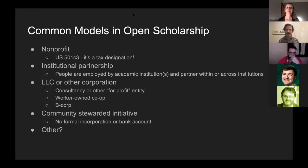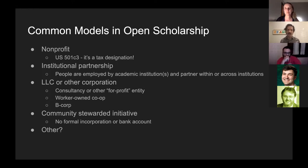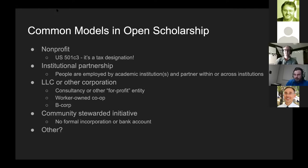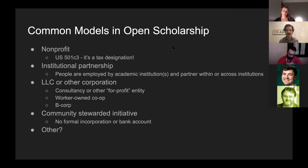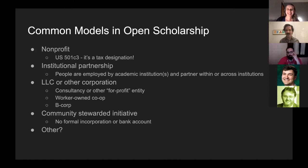We've been at the university for 15 years, and it looks like next year will be the year we become an actual entity within the university. We've had essentially an MOU with the university library that very loosely said this is where we are based, but that's the extent to which our status has been formalized. We've considered spinning off into a non-profit independent of the university, and also tried to find ways of institutionalizing ourselves further within the SFU library.